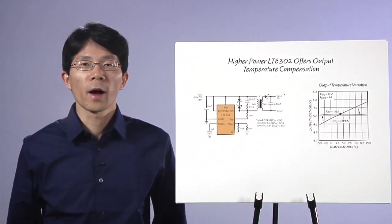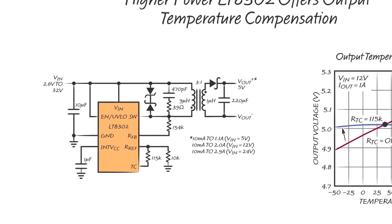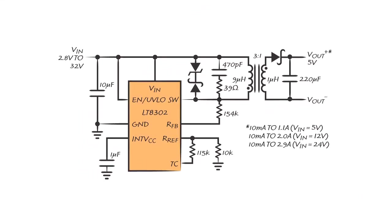Here is another 5-volt isolated flyback converter from 2.8-volt to 32-volt input using the higher power LT8302, another part in our Low IQ No Opto Flyback family.